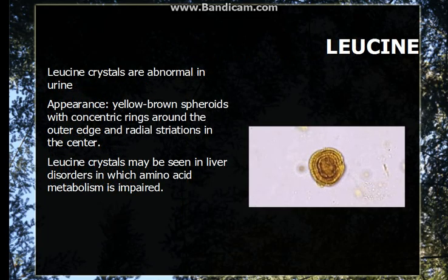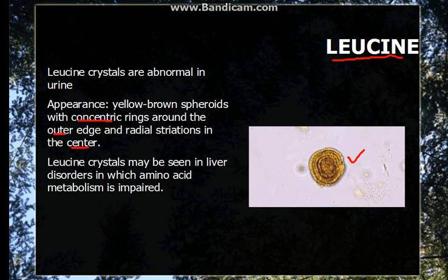Now going to leucine crystals. These are not normally present in the urine, unlike calcium oxalate and urates which are normally present. The appearance of the crystal is yellowish-brown, spherical in shape. It has concentric rings on the outer edge and radial striations in the center.